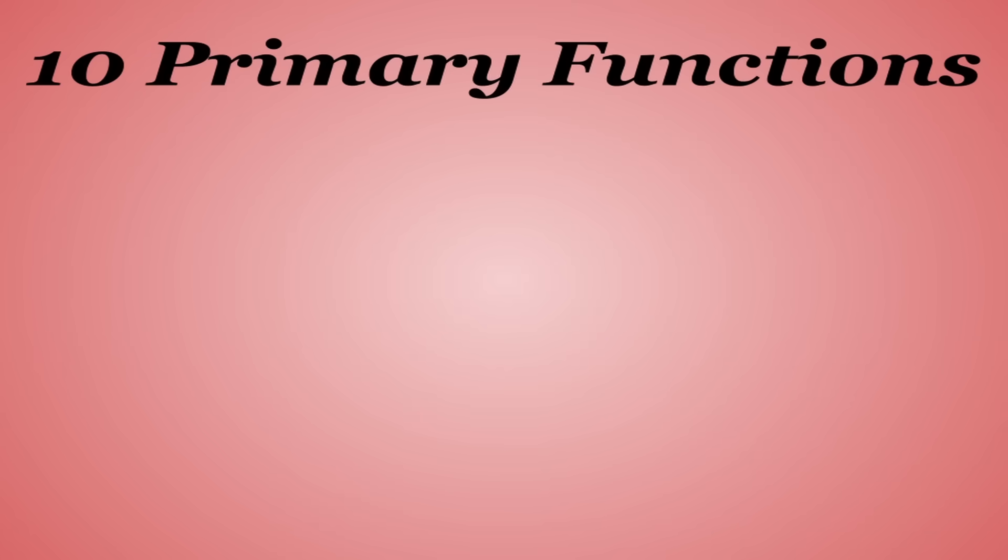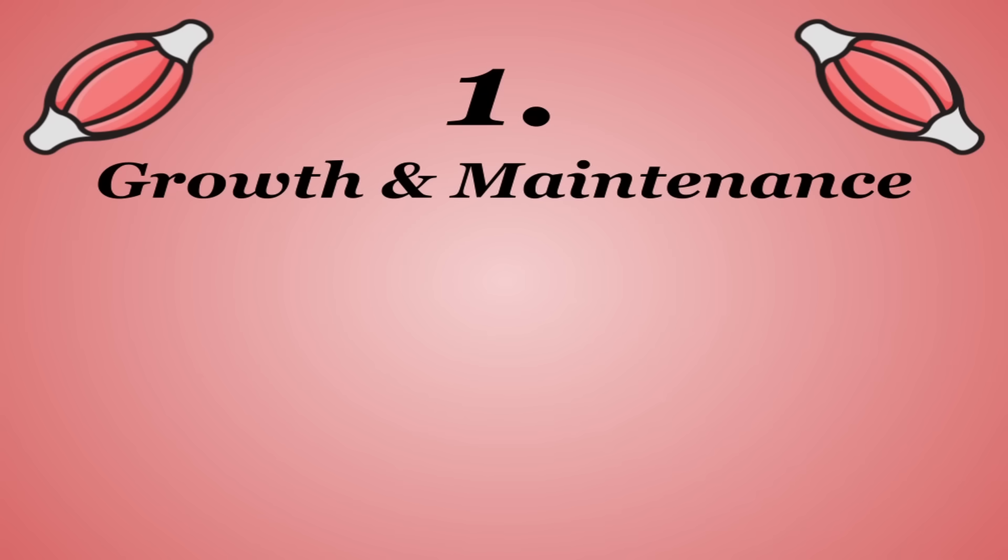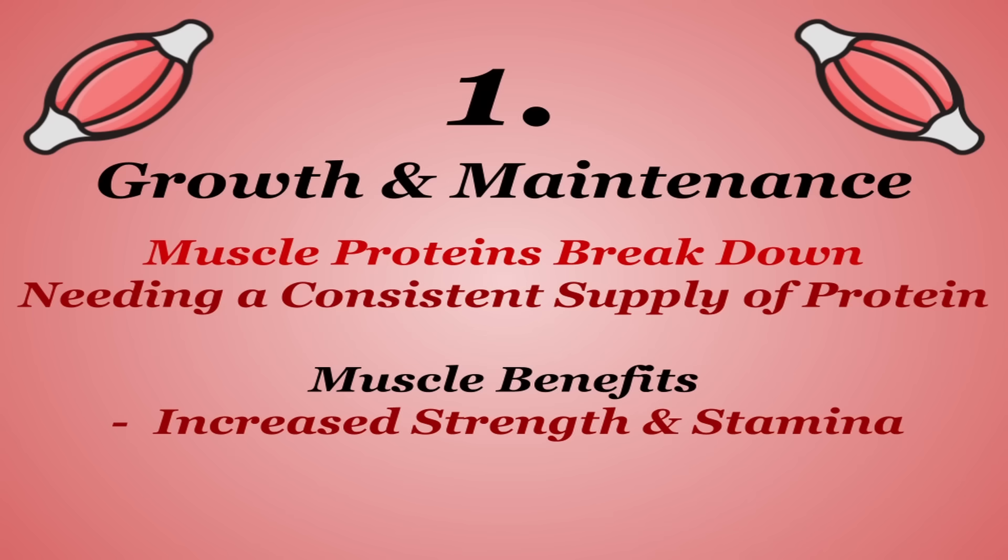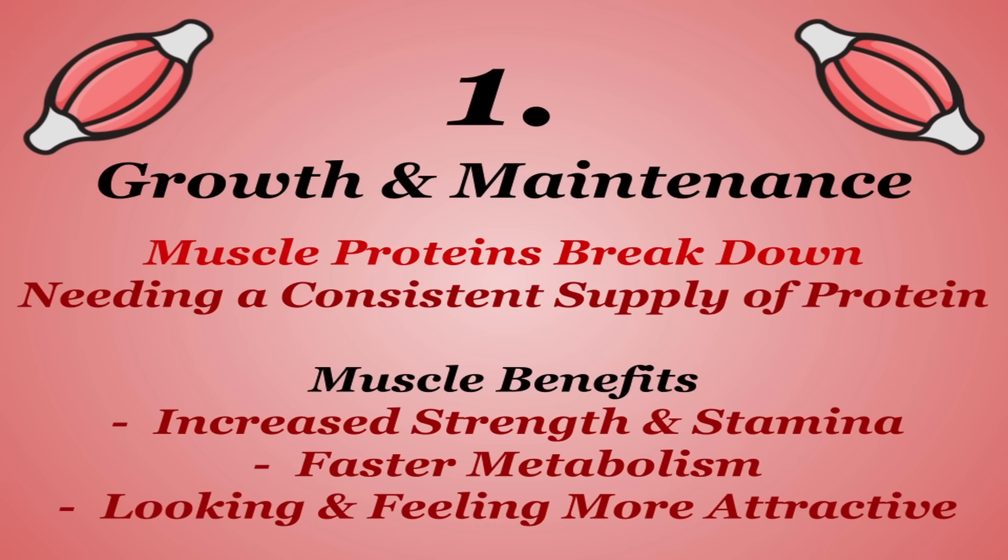Protein is responsible for 10 primary functions that are involved with pretty much everything in the body. When most people think of protein, they think of building muscle, and for good reason, as the first function of protein is growth and maintenance, especially of muscle tissue. Muscle proteins are constantly being broken down from exercise, yes, but also this is just a natural occurrence. Your body needs a consistent supply of protein to keep a balanced rate of breakdown and building and a slight surplus in order to build muscle, which comes with its own benefits like increased strength and stamina, a faster metabolism, and looking and feeling more attractive, which, let's be honest, matters.